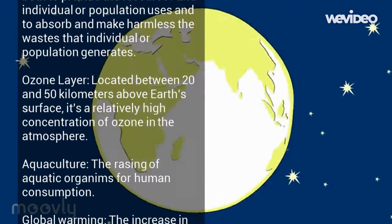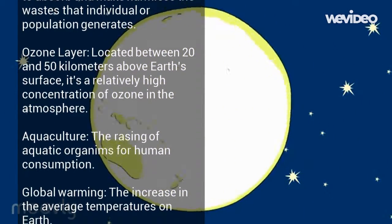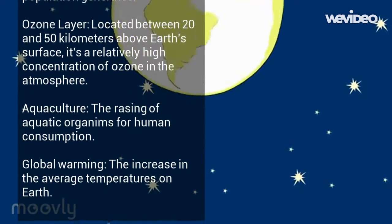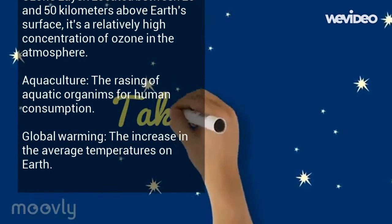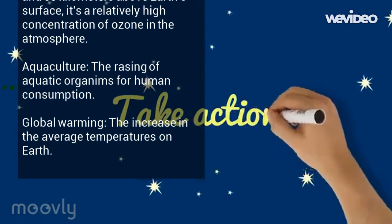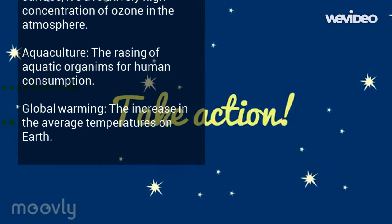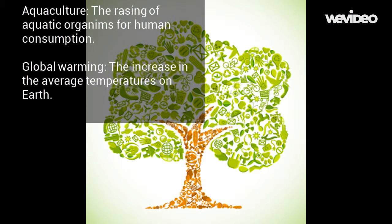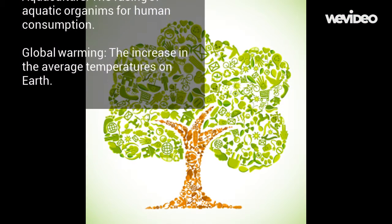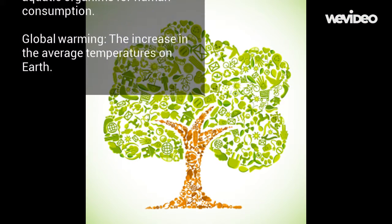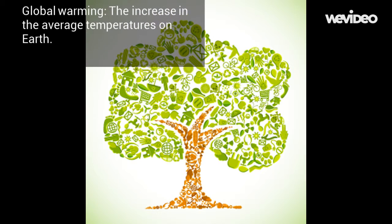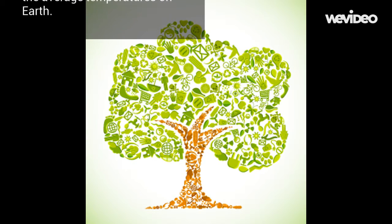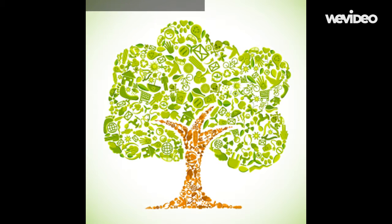The ozone layer is located between 20 and 50 kilometers above Earth's surface, and it has a relatively high concentration of ozone in the atmosphere. Aquaculture is the raising of aquatic organisms for human consumption. Global warming is increasing the average temperatures on Earth.